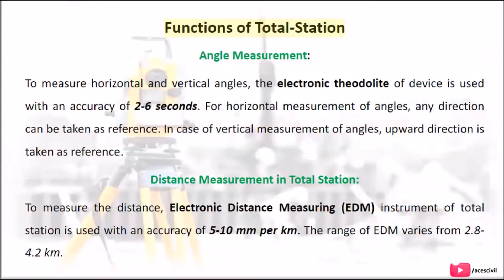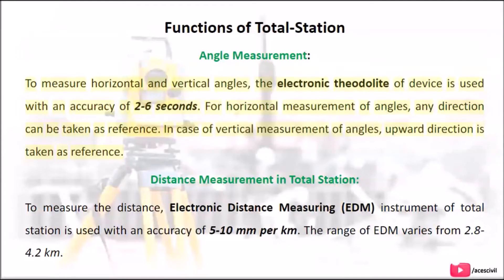Functions of Total Station — Angle measurement: To measure horizontal and vertical angles, the electronic theodolite of the device is used with an accuracy of 2 to 6 seconds. For horizontal measurement of angles, any direction can be taken as reference. In case of vertical measurement of angles, the upward direction is taken as reference.